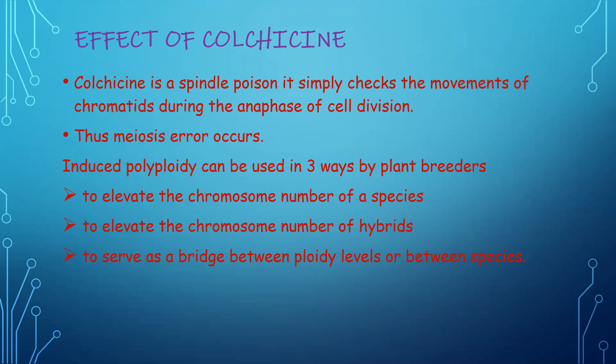Regarding the effects of colchicine: colchicine is a spindle poison. It checks the movement of chromatids during the anaphase of cell division, so spindle formation does not occur and chromosome separation is disrupted. As a result, the chromosomes will not be separated, leading to polyploidy.